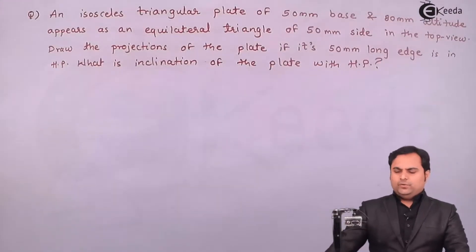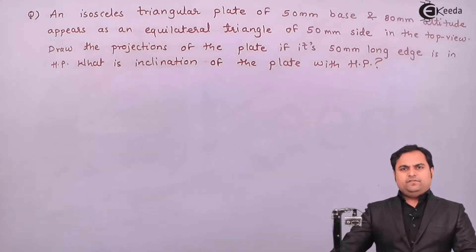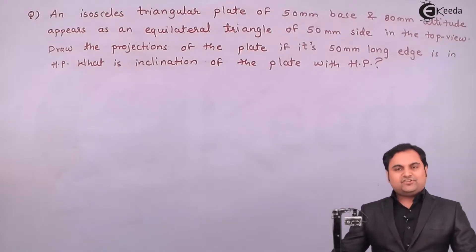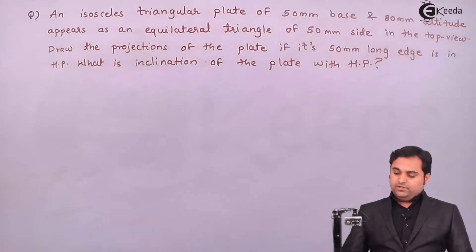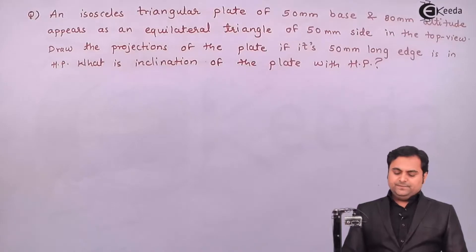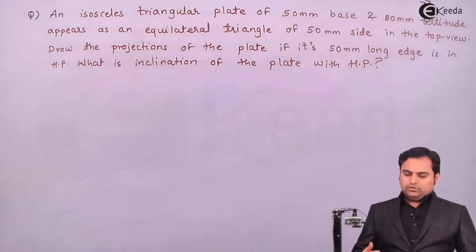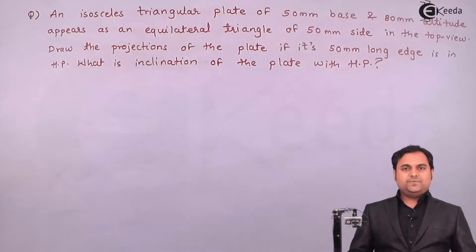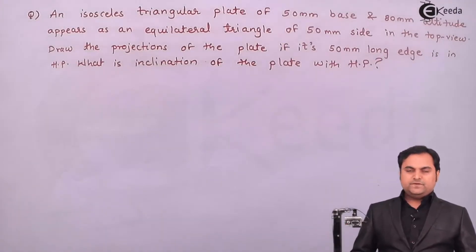In this video we'll see a problem on projection of planes. An isosceles triangular plate of 50 mm base and 80 mm altitude appears as an equilateral triangle of 50 mm side in the top view. Draw the projections of the plate if its 50 mm long edge is in HP. What is the inclination of the plate with HP?